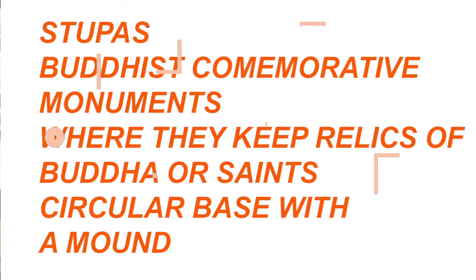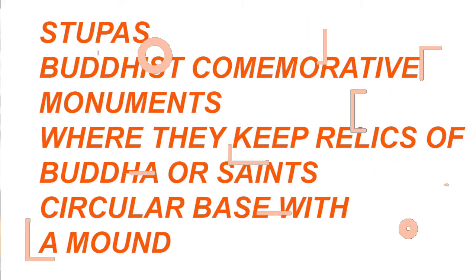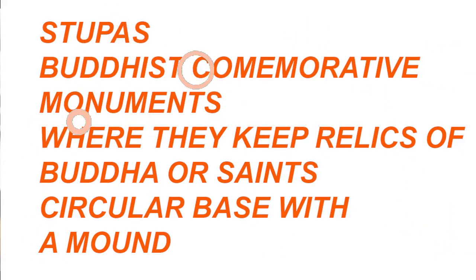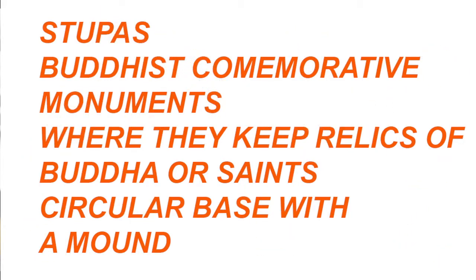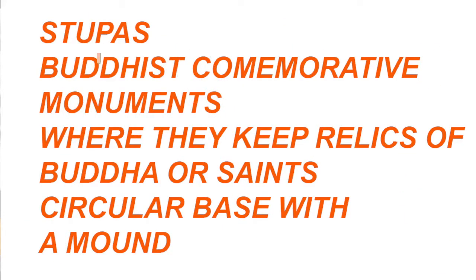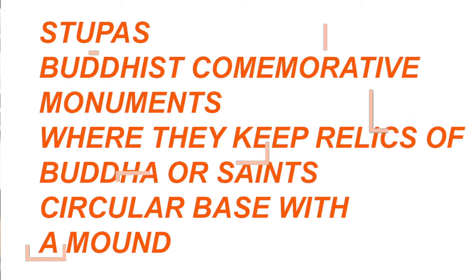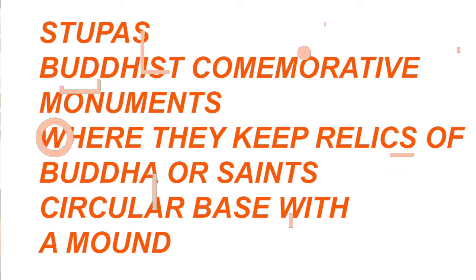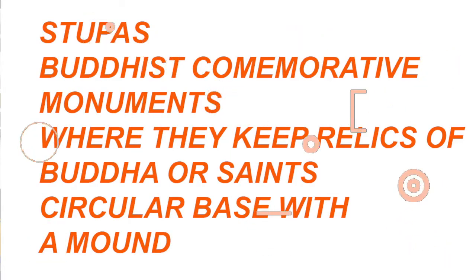The third type is Stupa. Stupas are commemorative monuments. When Buddha died, he was seated in a yogic state. Around him they built a mound — and even in the Vedic period, saints used to be buried in dome-shaped mounds. Stupas hold relics of Buddha or a saint and are used for worship in Buddhism. The Stupa has a circular base plan with a mound on top — it is a circular cylindrical dome-like structure.